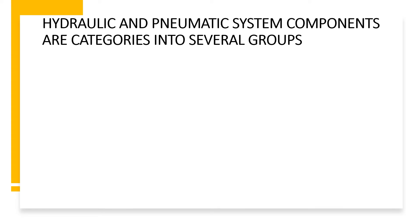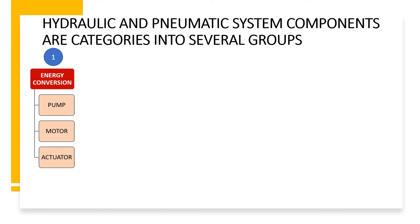Hydraulic and pneumatic system components are categorized into several groups. The first group is energy conversion, where energy is converted from one form to another with the help of different elements — for example, pump and motor. They convert electrical energy into mechanical energy, which is transferred to the fluid in the form of kinetic energy. In an actuator, the fluid's kinetic energy converts into mechanical energy and then into the work required from the hydraulic or pneumatic system.